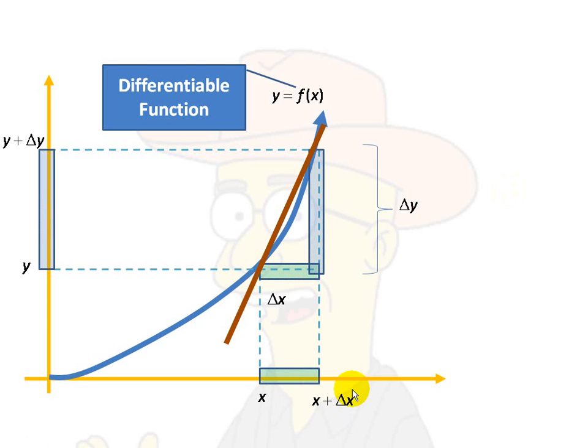So that we have this situation where we have horizontally, we have the change in x, which is x plus delta x minus x. Of course, it's delta x. And the change in y, which is y plus delta y minus y.